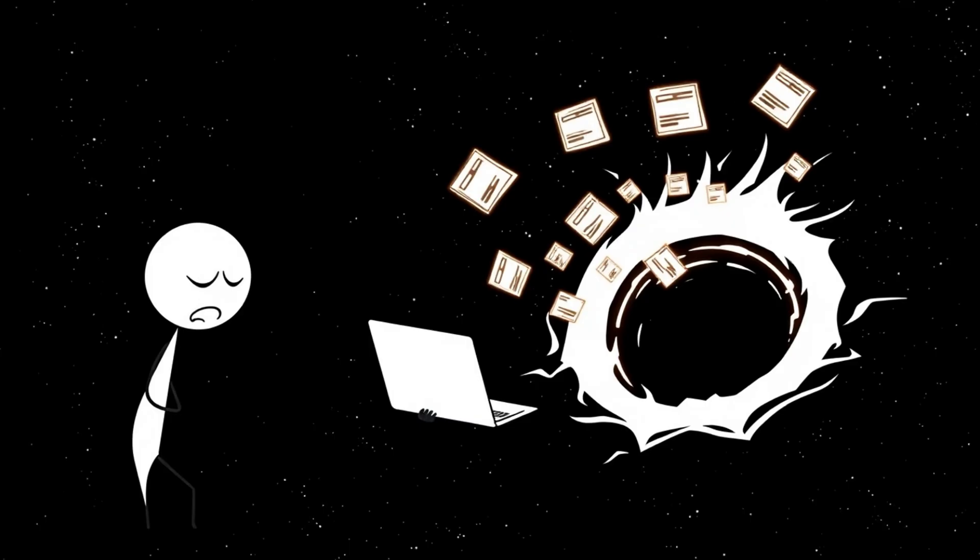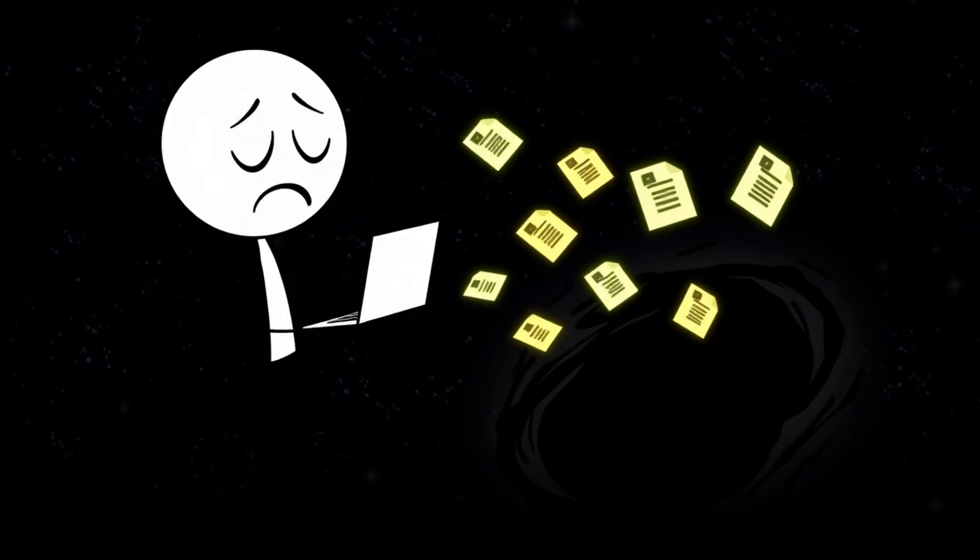But black holes act like cosmic trash bins. Anything falling in gets obliterated, from particles to the data describing their state and structure. Stephen Hawking calculated that black holes evaporate over time via Hawking radiation, but when the black hole is gone, where did the information go?